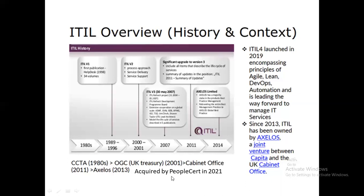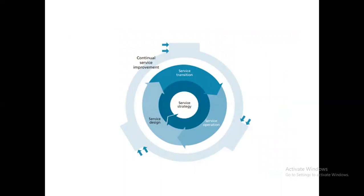This is quite theoretical — just need to know about it and then we'll see how it is applicable in the ServiceNow world. Now, at the core of ITIL you have five things: service strategy, service design, service transition, service operation, and CSI — Continual Service Improvement. Service strategy is the core of everything.